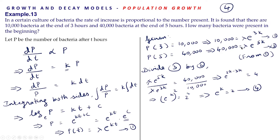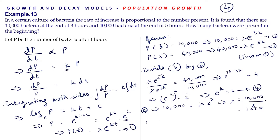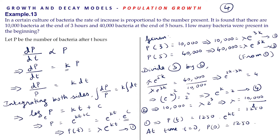From equation 2, substituting e^k = 2: 10,000 = lambda·(e^k)³ = lambda·2³ = lambda·8. So lambda = 10,000/8 = 1250. Therefore equation 1 gives P(t) = 1250·e^(kt). To find how many bacteria were present in the beginning, we set t = 0: P(0) = 1250·e^0 = 1250.